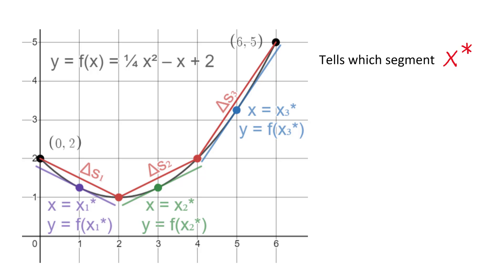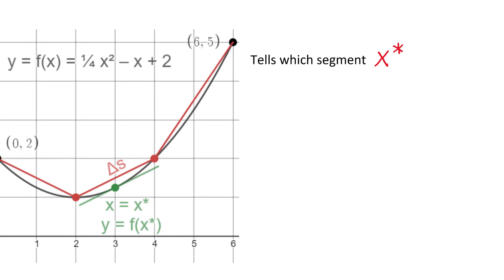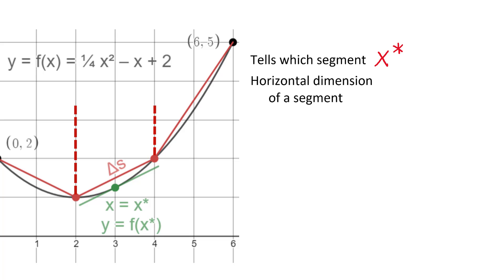Everything we do will have to be written in terms of X. In these problems, we always break a large thing up into small parts, and there is always some dimension that is very small, approaching zero in the limit. In this case, that is the horizontal dimension of the segment. As we move from the left end of a segment to the right end of the same segment, we go a little bit forward along the X-axis. If we are talking about a finite number of segments, each with a finite length, we call this width delta X. When we talk about an infinite number of segments with the horizontal dimension approaching zero, we call this width DX.